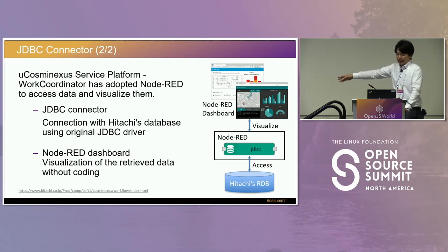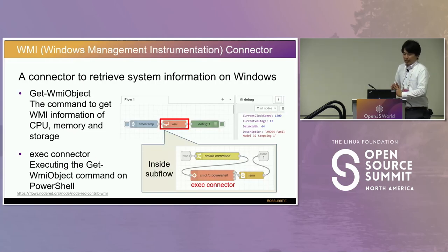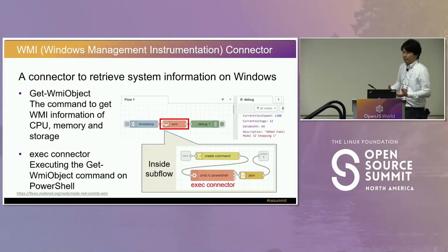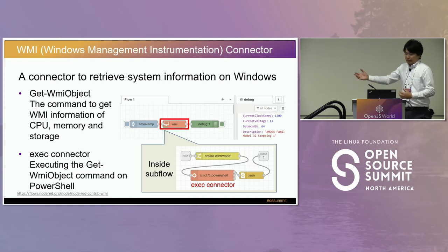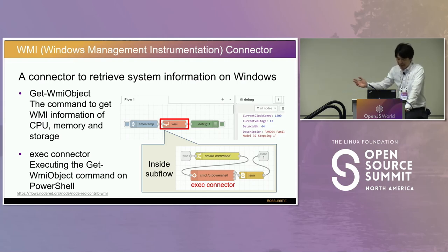The Cosminex Access Service Platform Work Coordinator has adopted Node-RED, and since its database supports only Java and C language, we used the JDBC connector to access it through Java. Additionally, this product uses Node-RED dashboard to visualize the data. The next one is the WMI connector, which retrieves system information on Windows. In PowerShell, the get-WmiObject command gets system information such as CPU information, memory usage, and disk space. The exec connector executes this command in the command prompt. The WMI connector returns CPU clock speed, current voltage, and processor type.